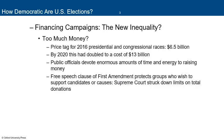Another issue is campaign finance. The price tag for the 2016 presidential and congressional races was around $6.5 billion all added together. By 2020, this had doubled to a cost of $13 billion. A majority of that is in down-ballot races, especially for Congress.